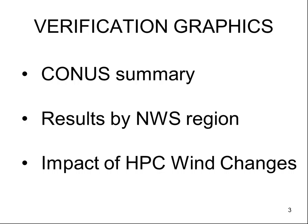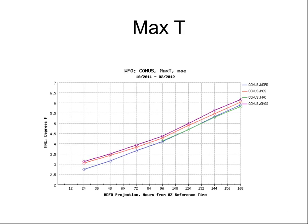We have a CONUS summary and then breakdown by region. First the CONUS MAX-T slide. NDFD is the blue line, and then you have MOS, HPC, and gridded MOS. NDFD in the short term steps away from the MOS guidance products, and HPC is right on their line in the extended period.